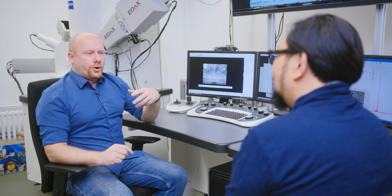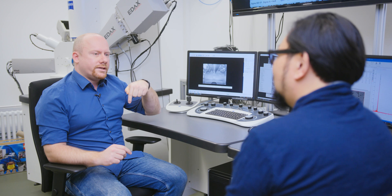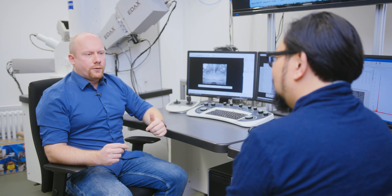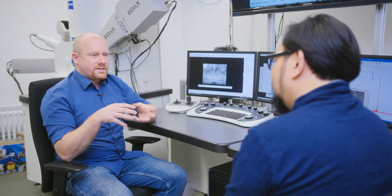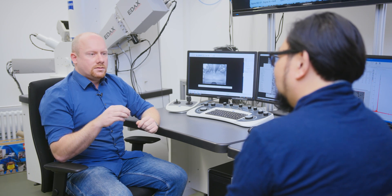And the term scanning in scanning electron microscope means we scan the primary electron beam over the sample surface and basically for each pixel or each point in the scan pattern we get a specific signal of different electrons. Got it.